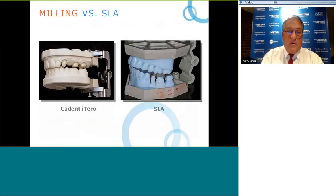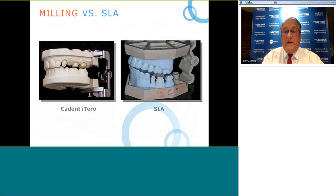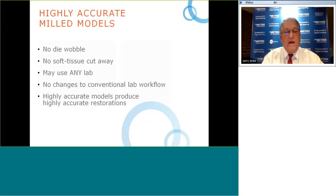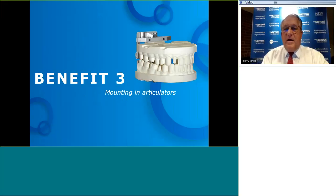You can see the iTero die on the left versus an SLA stereolithography 3D printed model, which requires a cutaway to create a die for the lost wax process. To summarize: highly accurate milled models, no die wobble, no soft tissue cutaway, use any lab, no changes to conventional lab workflow, and highly accurate models that produce highly accurate restorations.